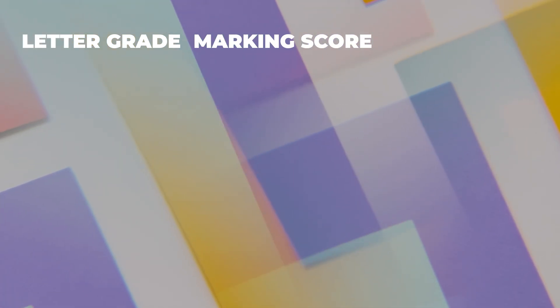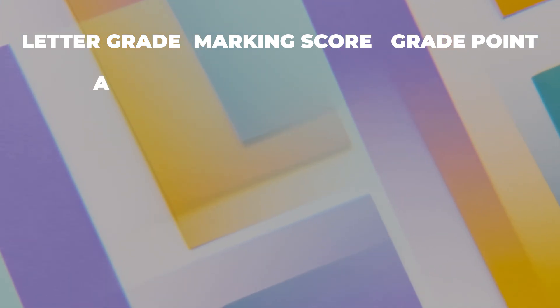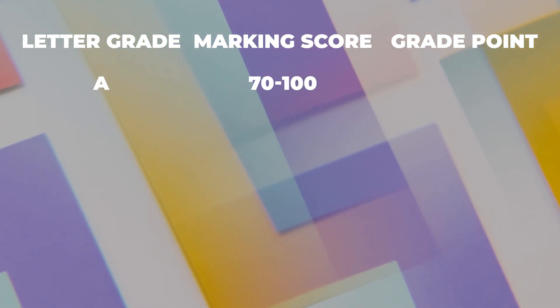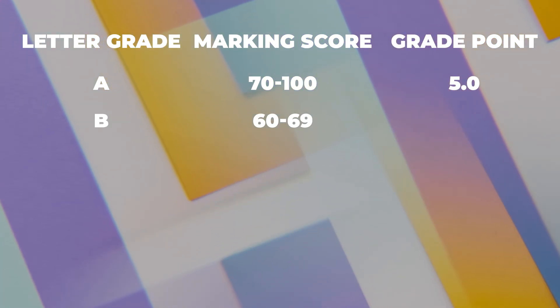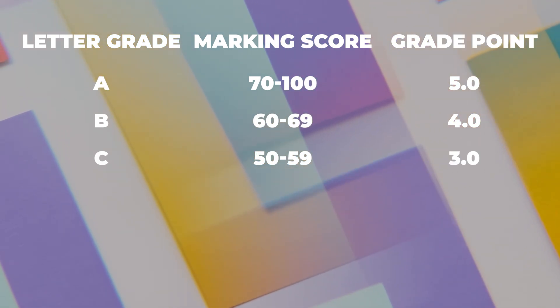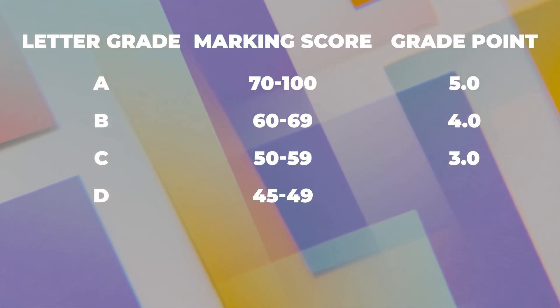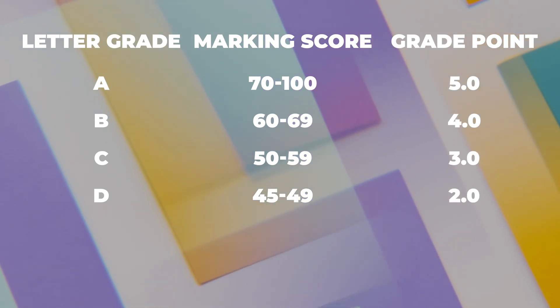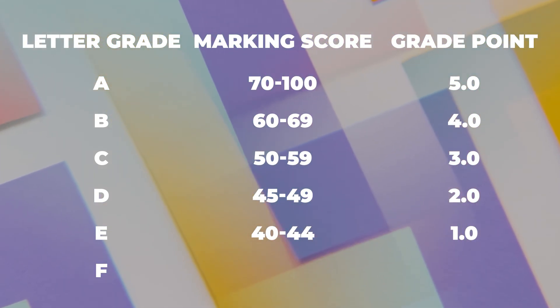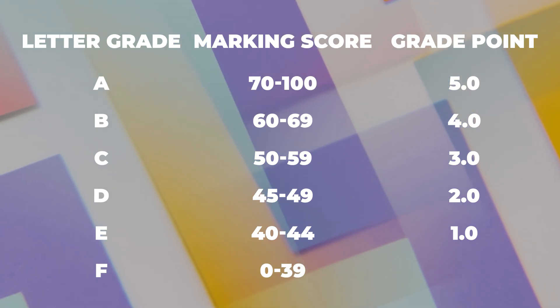The grading system goes like this. We have the letter grade, the marking score, and the grade point. A is 70 to 100 with a grade point of 5. B is 60 to 69 with a grade point of 4. C is 50 to 59 with a grade point of 3. D is 45 to 49 with a grade point of 2. E is 40 to 44 with a grade point of 1. F is 0 to 39 with a grade point of 0.